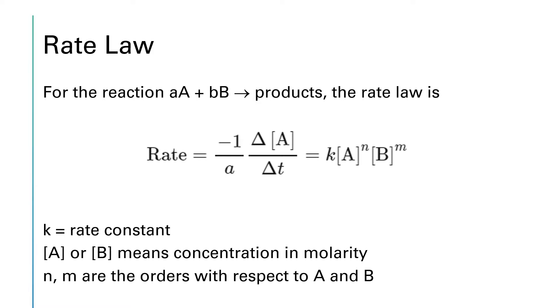Each reaction has a unique rate law. If we're looking at a generic reaction little a times big A, so that means the little a is the coefficient and big A is the chemical, and then we're reacting it with little b's worth of chemical B to make products.